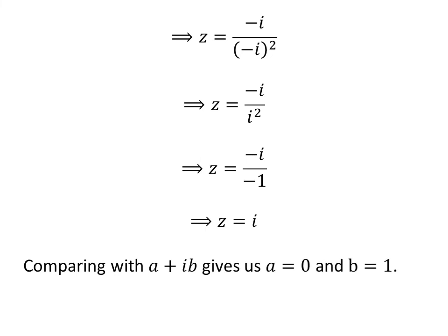Comparing z with a plus i times b gives us a is equal to 0 and b is equal to 1.